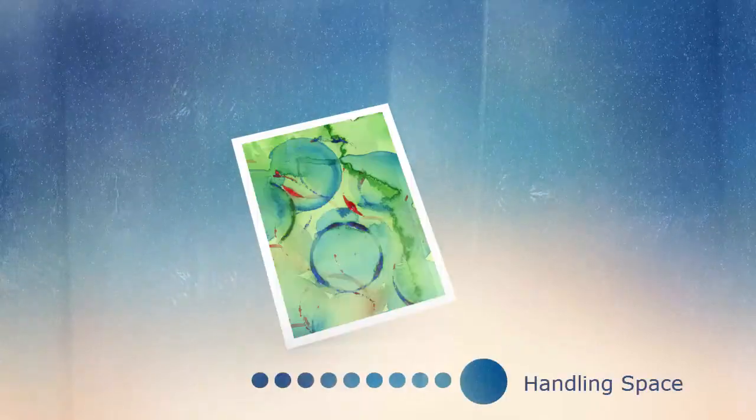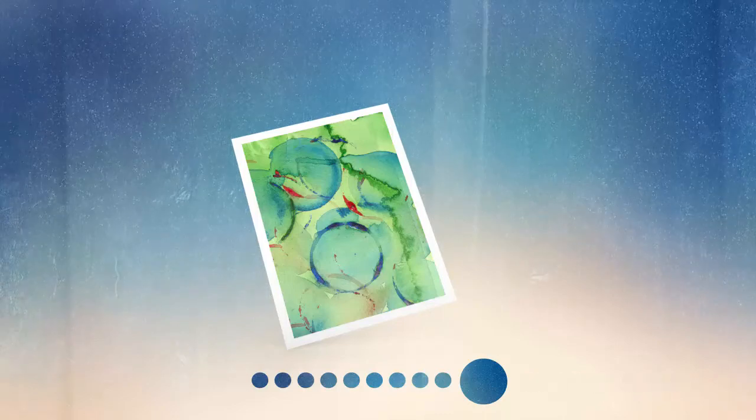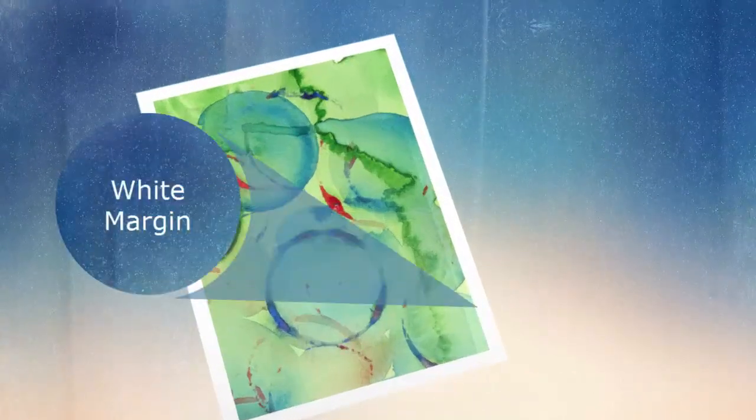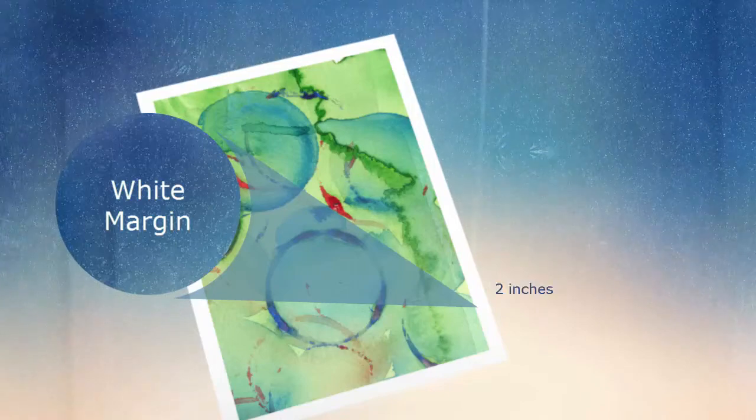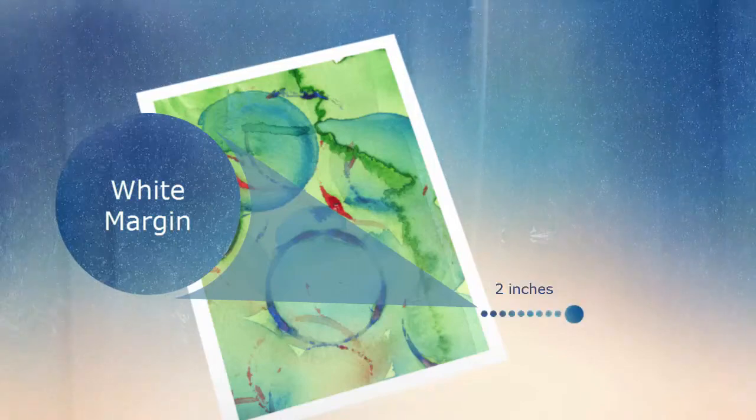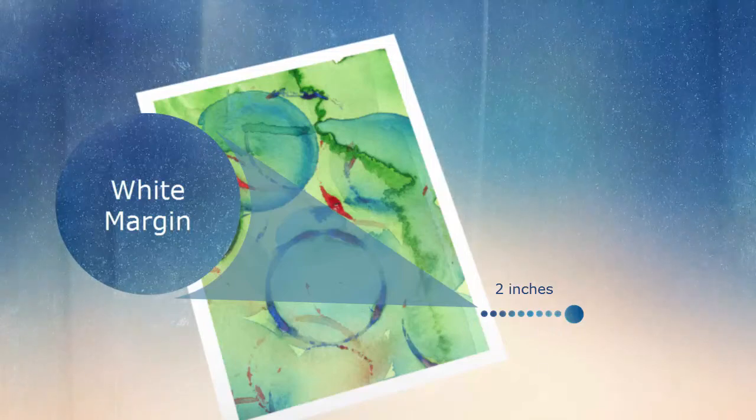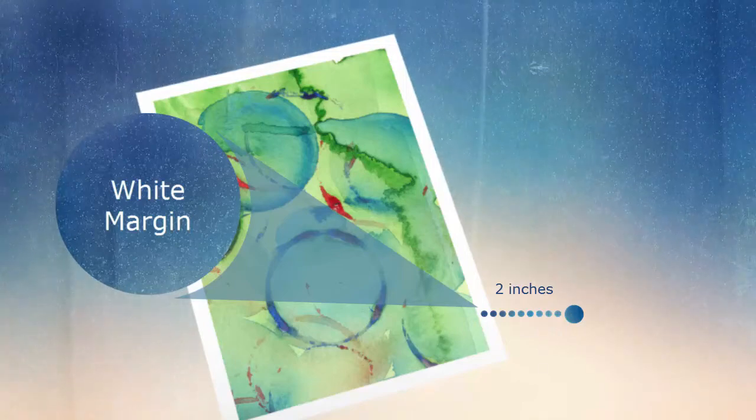Handling space. A white margin will be included around the outside of your print. When a canvas is printed, it will automatically include approximately 2 inches of handling space all the way around, and your total sheet size will be wider and taller than your requested print size.